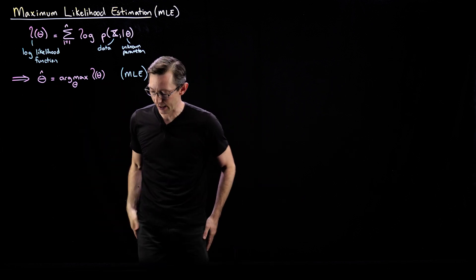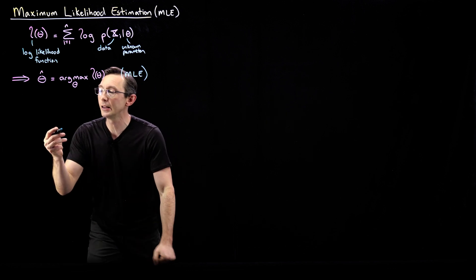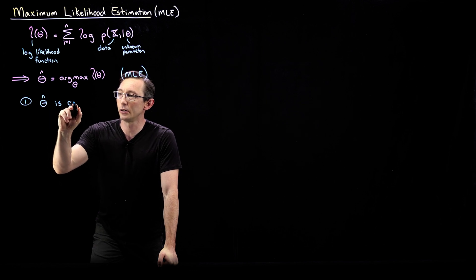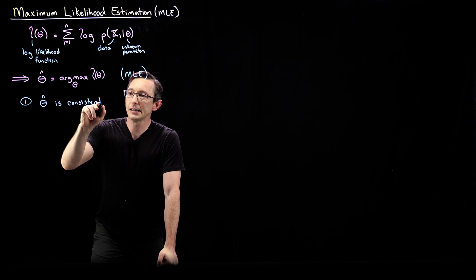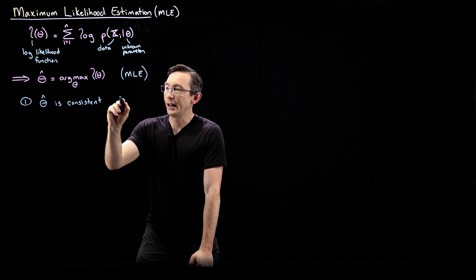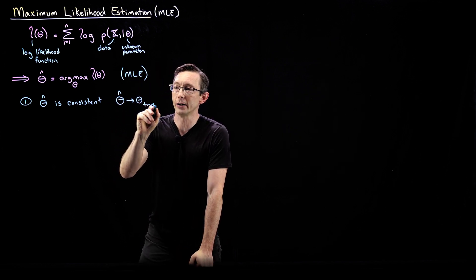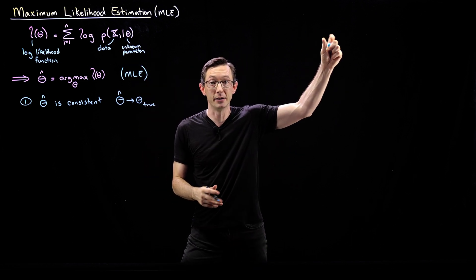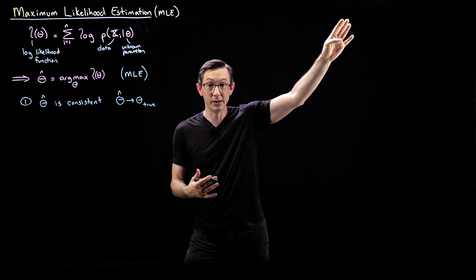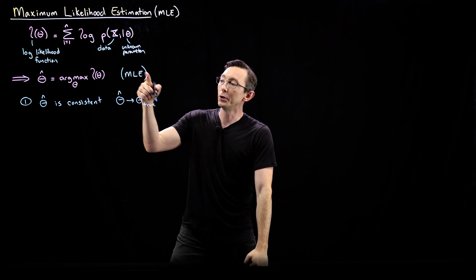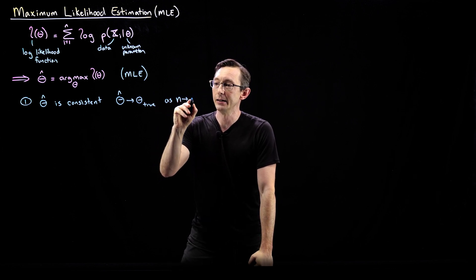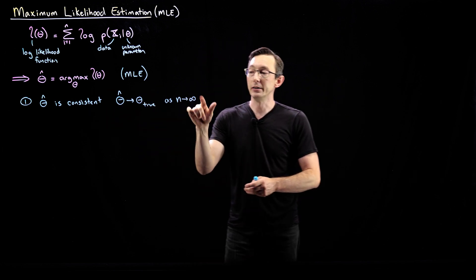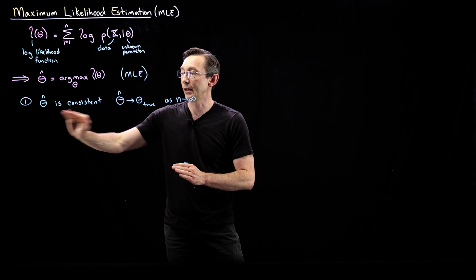This is a nice estimation procedure. The properties I want to tell you today — there are two really important ones. The first property is that theta hat is what's called consistent. Consistent specifically means that theta hat approaches theta true: if there is a true underlying parameter — say this is a Poisson distribution and there's an actual parameter lambda that was used to generate the data — then our estimate will approach the true value as our sample size n approaches infinity. So we get this nice convergence of our estimate to the true value in the large data limit. This is a very important notion of consistency.